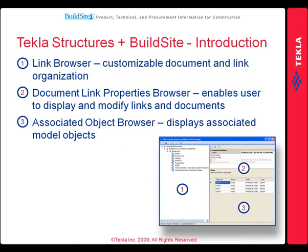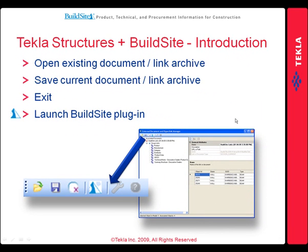The link browser allows you to customize the links between model and documents in any way you choose, like storing links hierarchically and editing their names. The document link properties browser enables you to display and modify links to documents from BuildSite.